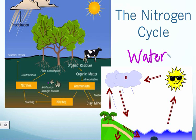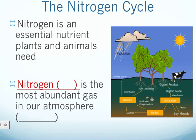We're moving on today to a new cycle — the nitrogen cycle — where nitrogen does the same thing: it passes through all of earth's four spheres. Just like water, nitrogen passes through all of our spheres because it is a very important nutrient to all living things. Both animals and plants need nitrogen in order to survive.